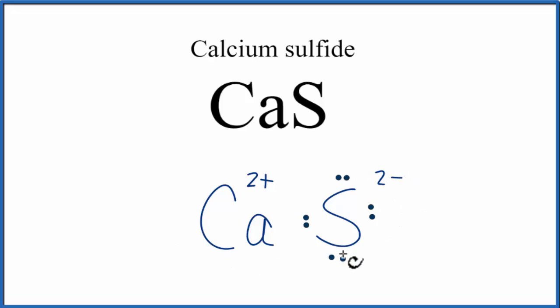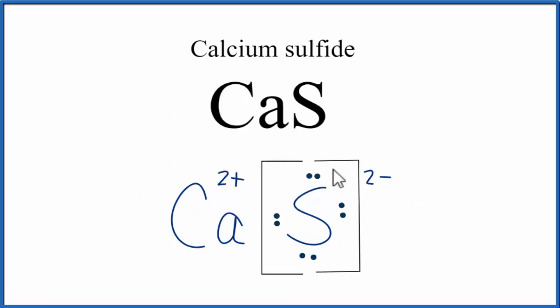Let's put brackets around the sulfide ion here. And you'll sometimes see brackets around the positive metal cation, the calcium 2 plus ion. So that makes this the Lewis structure for CaS, calcium sulfide.